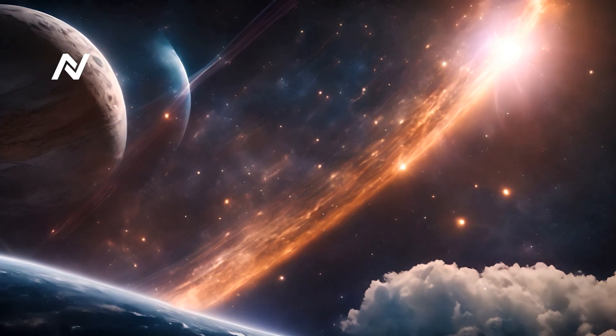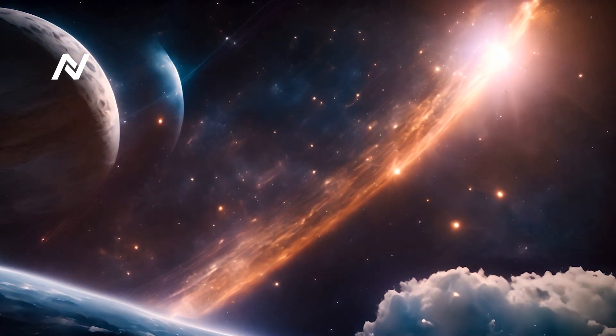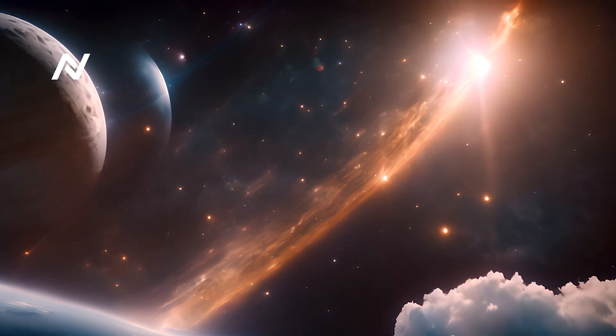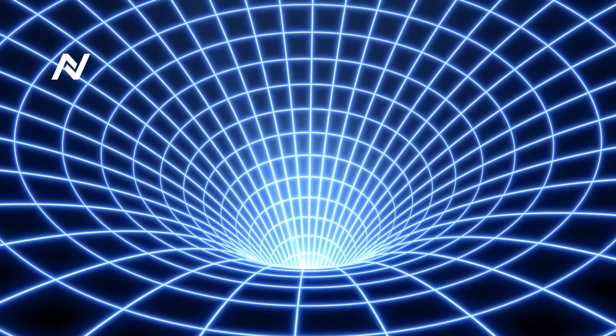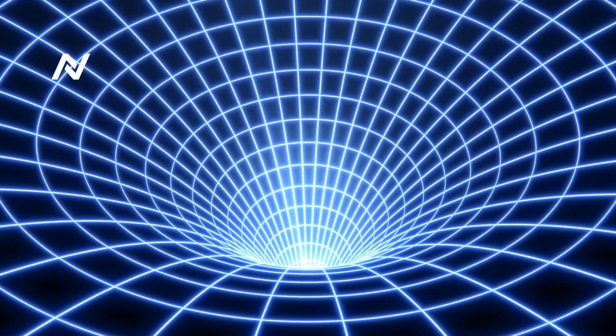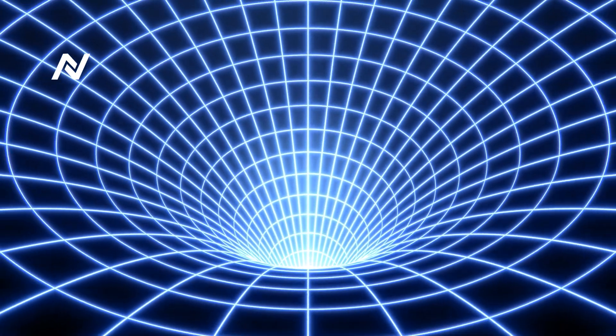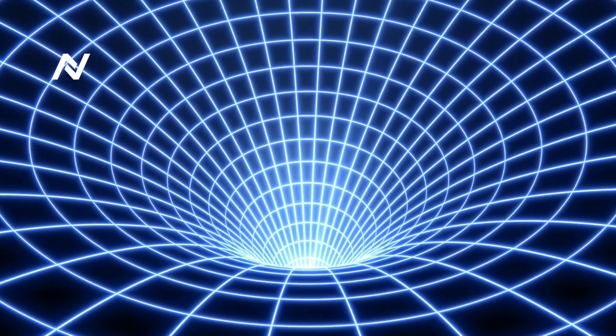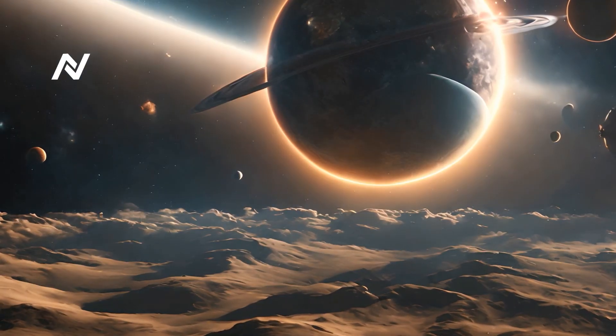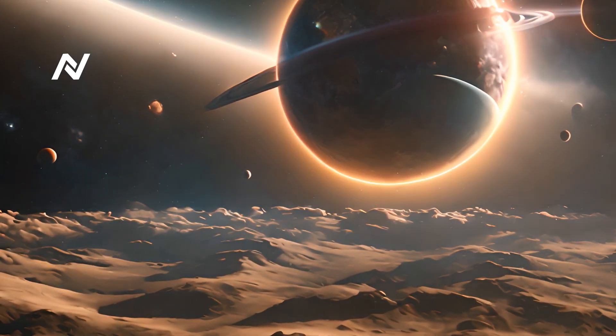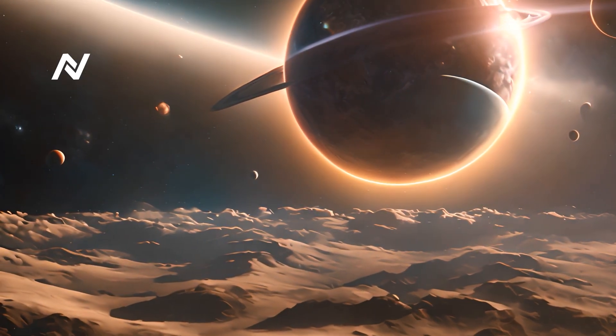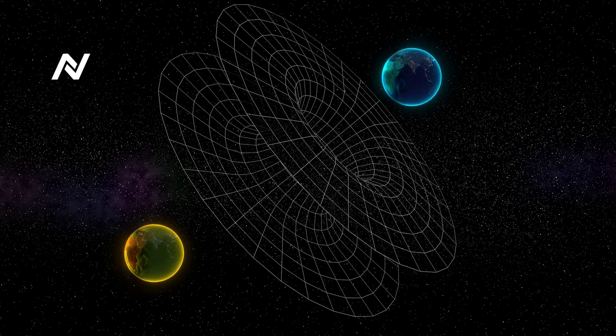But what would happen if this ability to see space-time extended beyond just the large-scale movements of stars and planets? What if we could see space-time on a smaller, more personal scale? Would we see the warps and bends caused by our own bodies? Every object with mass bends space-time, including you and me. It's just that the effect is so tiny we don't notice it.